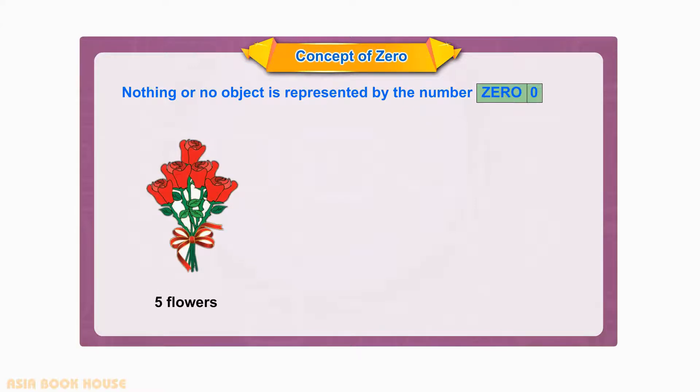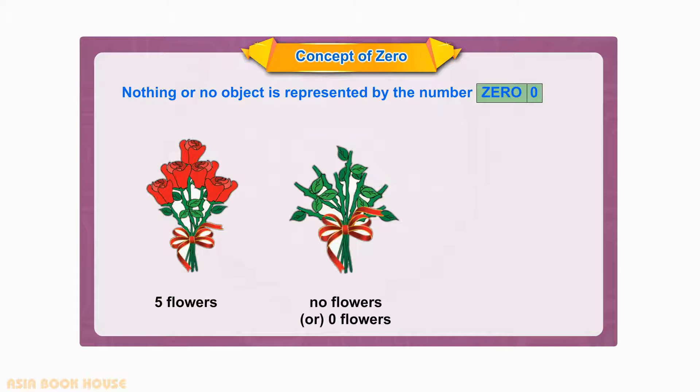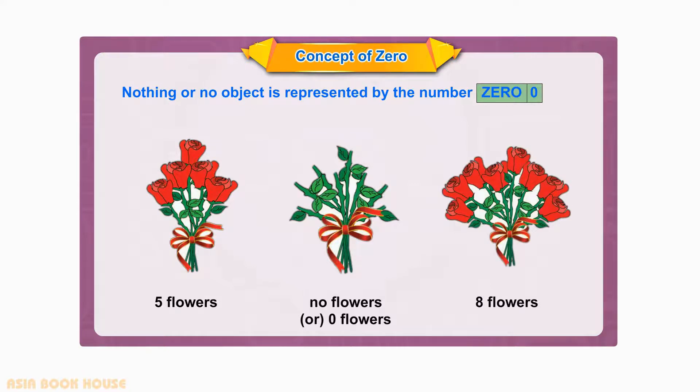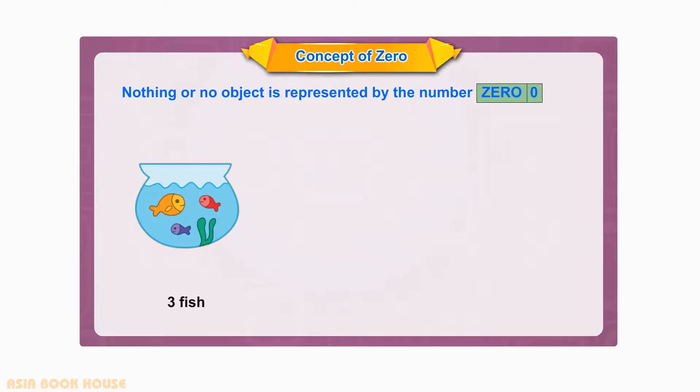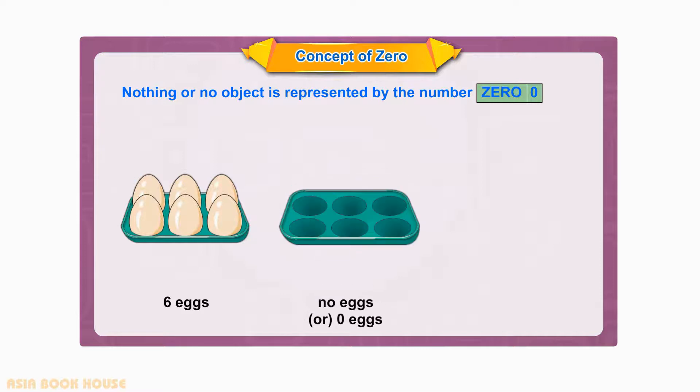Five flowers. No flowers, or zero flowers. Eight flowers. Three fish. No fish, or zero fish. Two fish. Six eggs. No eggs, or zero eggs. Observe and learn.